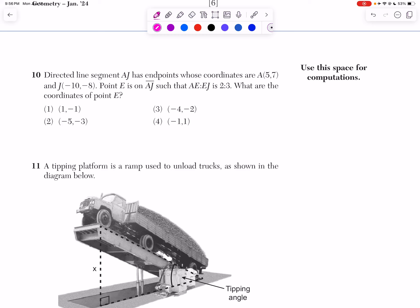Number 10. Directed line segment AJ has endpoints whose coordinates are (5, 7) and J (-10, -8). Point E is on AJ such that AE to EJ is 2 to 3. What are the coordinates of point E?